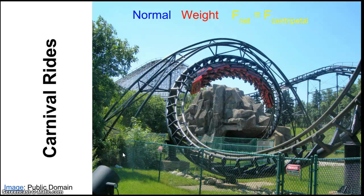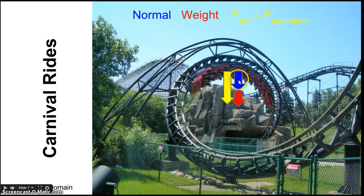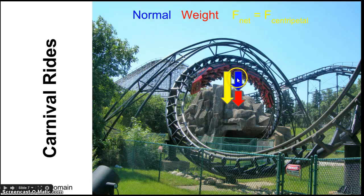The types of problems we'll do involve finding centripetal force, which requires looking at the sum of forces. A common example is carnival rides like a roller coaster. At the top of a loop, the net inward force — the centripetal force — is a combination of the normal force from the seat and your weight. At the right speed, your weight equals the centripetal force needed, normal force goes to zero, and you feel weightless going around the corner.